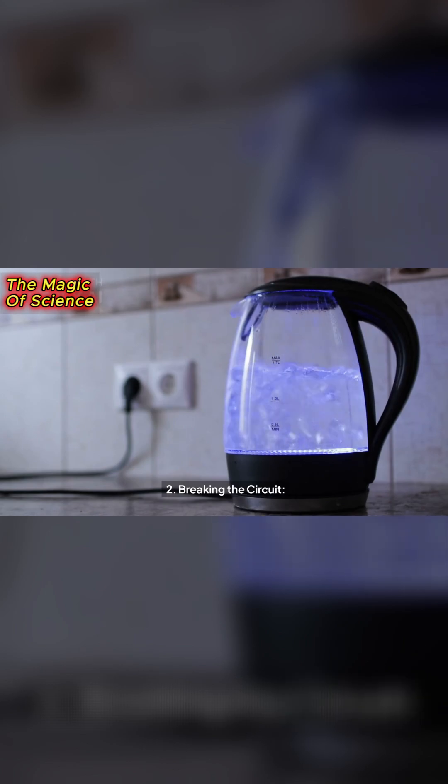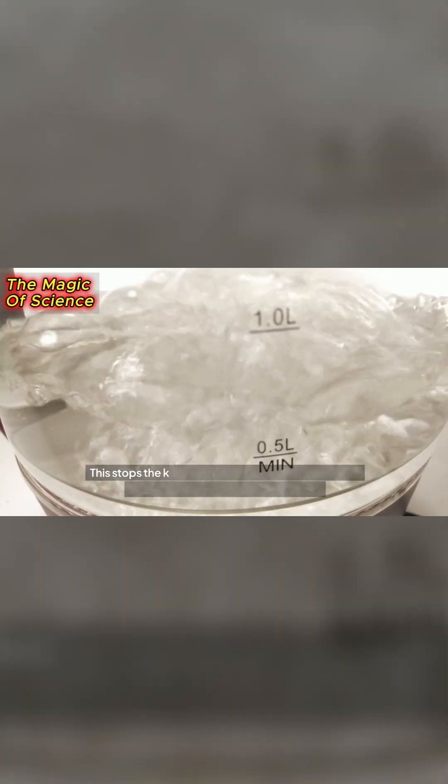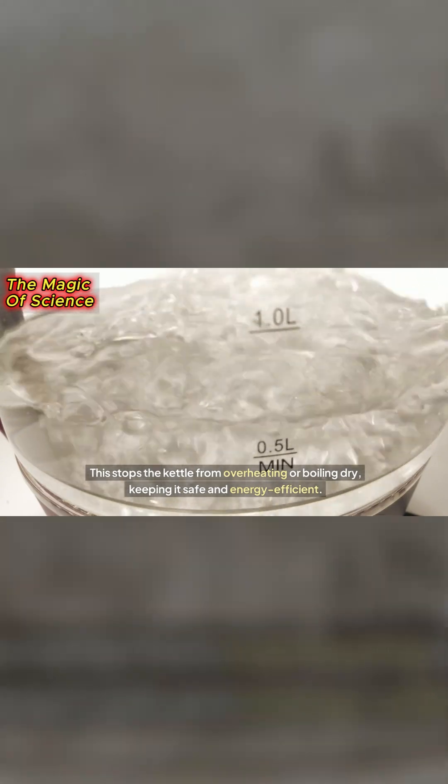2. Breaking the circuit. The bending of the strip flips a switch, cutting off the electricity to the heating element. This stops the kettle from overheating or boiling dry, keeping it safe and energy-efficient.